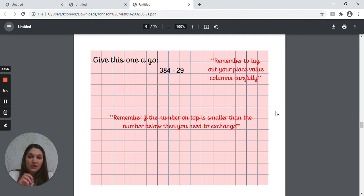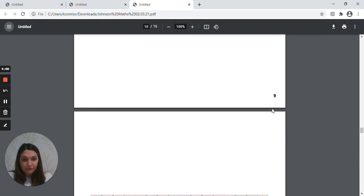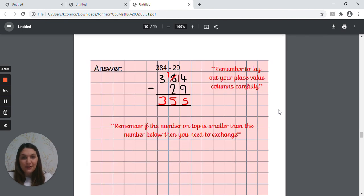Okay, hopefully you laid it out like this. So the nine should be in the ones column and the two in the tens column. You can't do four take away nine so you'd need to exchange from the tens, turning that eight into seven and carrying the one to make that 14 take away nine, which left you with five. Seven take away two, which left you with five, and three take away nothing left you with three.